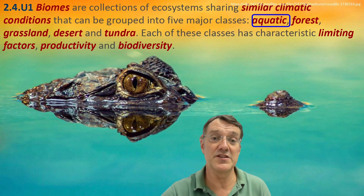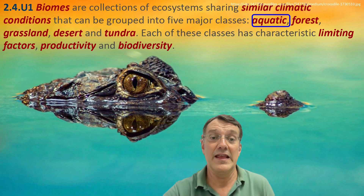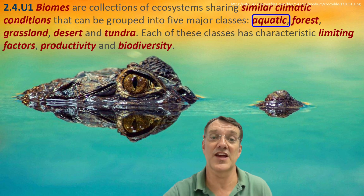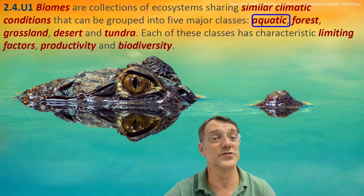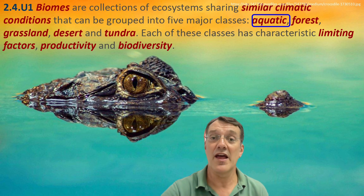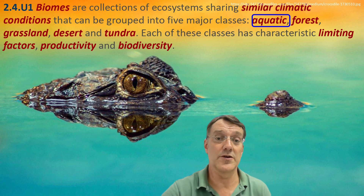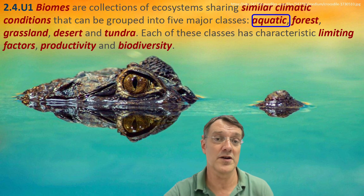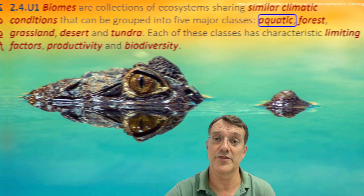Here we see a specific example of an aquatic biome. Aquatic biomes, like all major biome classes, have specific limiting factors, productivity levels, and biodiversity characteristics that make them distinct. For aquatic ecosystems, limiting factors often include light penetration through water and the availability of dissolved nutrients.